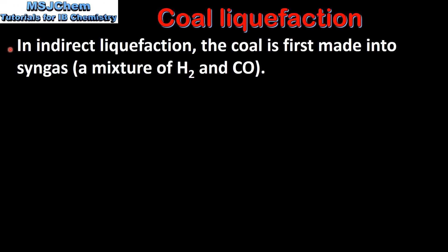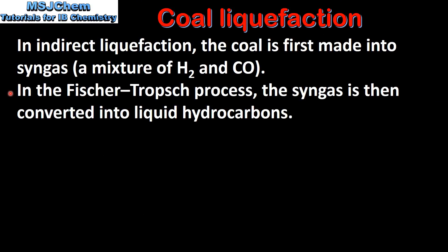In indirect liquefaction, the coal is first made into syngas, which is a mixture of hydrogen and carbon monoxide. In the Fischer-Tropsch process, the syngas is then converted into liquid hydrocarbons.